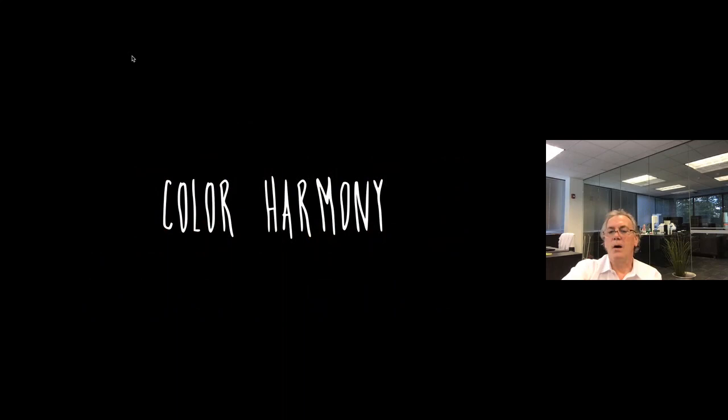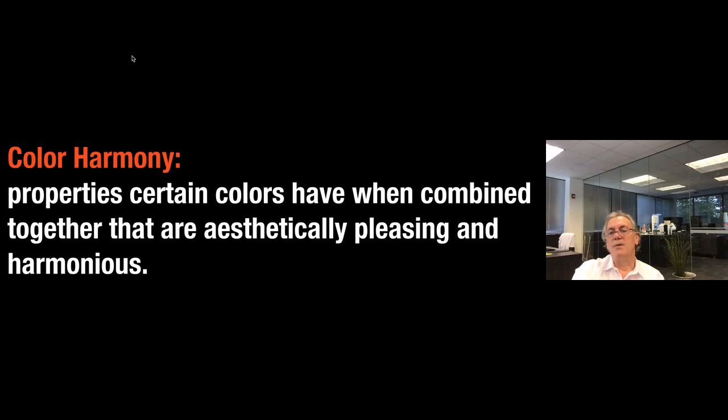Color harmony. Color harmony basically refers to the property that certain colors have when combined together and that are aesthetically pleasing and in harmony with each other. The colors are usually arranged in schemes.